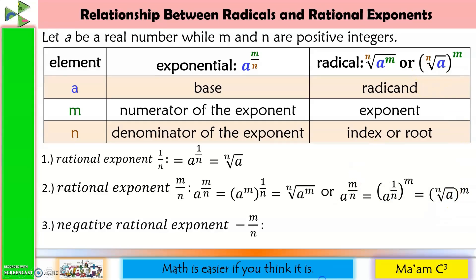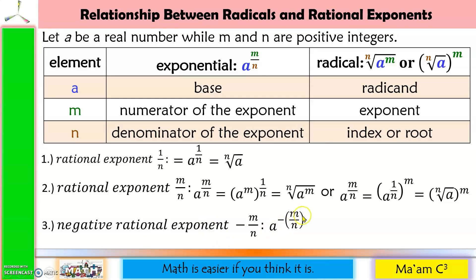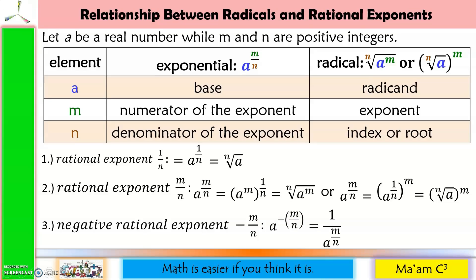And last: when we have a negative rational exponent, such as a raised to the negative of m over n, we bring the whole expression down to make the negative exponent positive. So this becomes 1 over a raised to m over n.